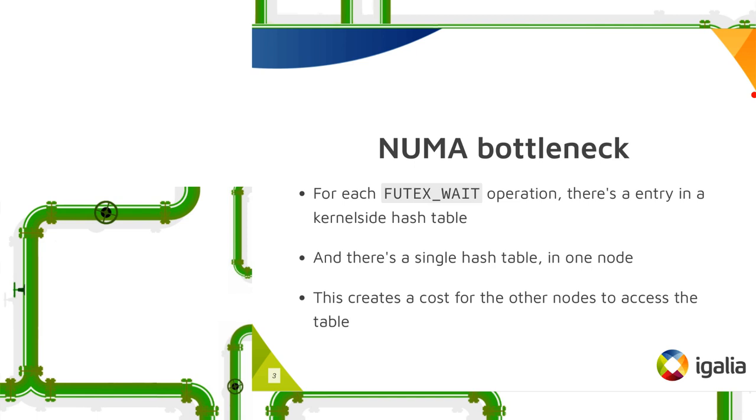And one thing that we still need to solve is the NUMA bottleneck, because on the kernel side you only have a single hash table. So every operation will be registered on a single hash table, and this hash table will be only in one node. That means every other node will have a cost to access this information when doing Futex operations.